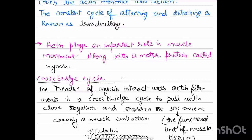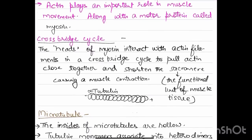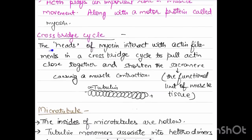Actin plays an important role in muscle movement along with a motor protein called myosin. The cross-bridge cycle is where the heads of the myosin interact with actin filaments to pull actin close together and shorten the sarcomere, causing a muscle contraction. Sarcomere is the functional unit of muscle tissue.